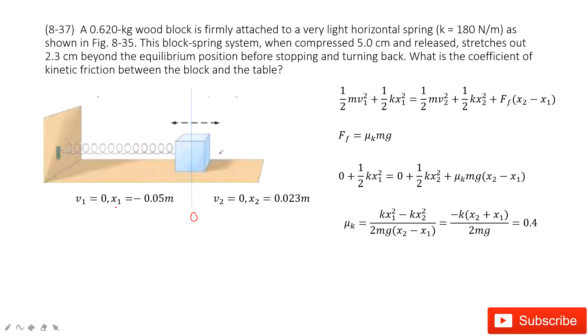The box will move to position two. And at position two, it gets stationary. V2 is zero, and x2 is 0.023 meter.